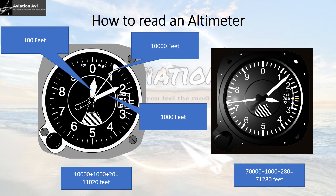Now for the bonus section: how to read the altimeter. There are three needles in the barometric altimeter. The first is the needle with a triangular head, which gives the reading in 10,000 feet. The next is the longer needle, which gives the reading in thousands of feet. The third is the short needle, which gives the reading in hundreds of feet.